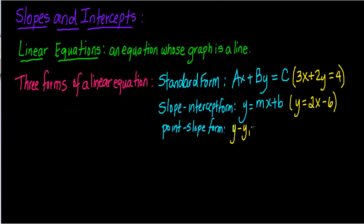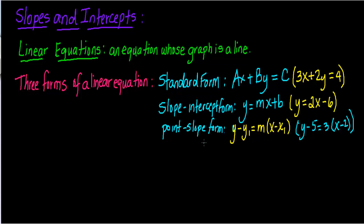Point-slope form looks like Y minus Y-sub-1 equals M times the quantity X minus X-sub-1. An example written in point-slope form would be Y minus 5 equals 3 times the quantity X minus 2. Notice in all of these examples, X has an exponent of 1, which tells you the graph will be a line. Point-slope form makes it easy to identify the slope and a point on the line. Today we'll concentrate on slope-intercept form, and tomorrow we'll do point-slope form. Standard form we will not cover.